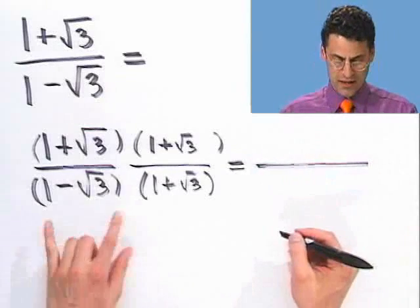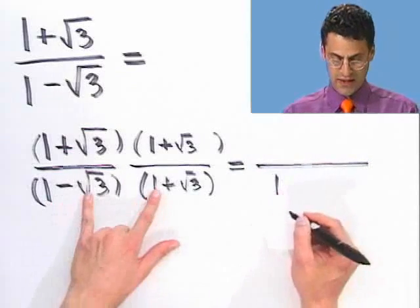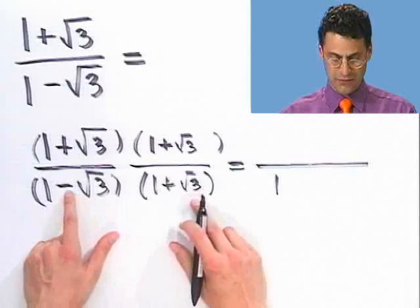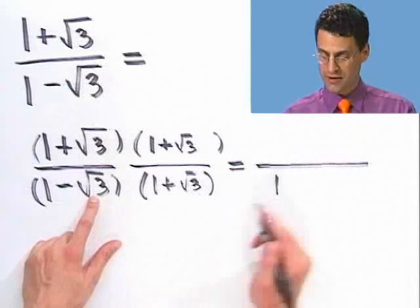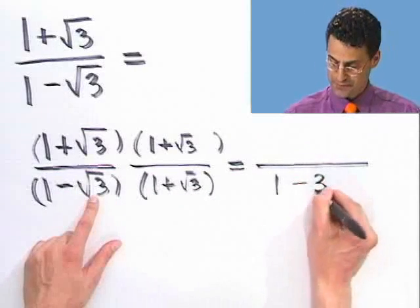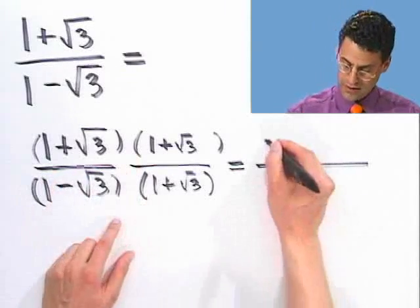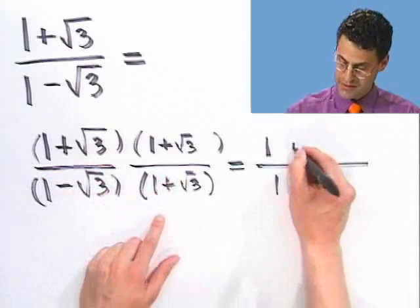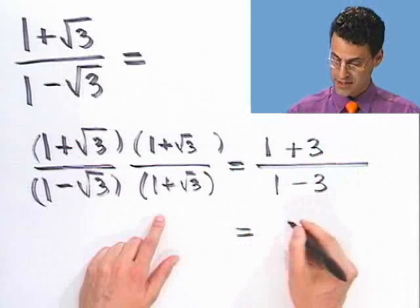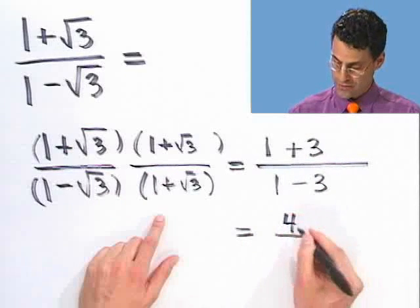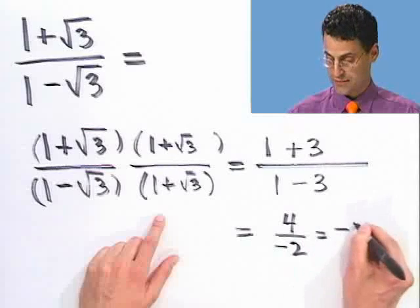Multiplying out the bottom: I see a one, and then the inside term and the outside term cancel, leaving minus square root of three times the square root of three, which is just minus three. So the bottom is one minus three, which is negative two. On the top I get the same thing: I get a one, terms cancel, and the last term is plus three. So this looks like four over negative two, which equals negative two.